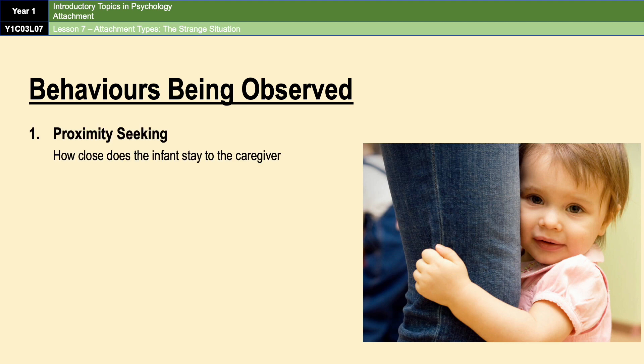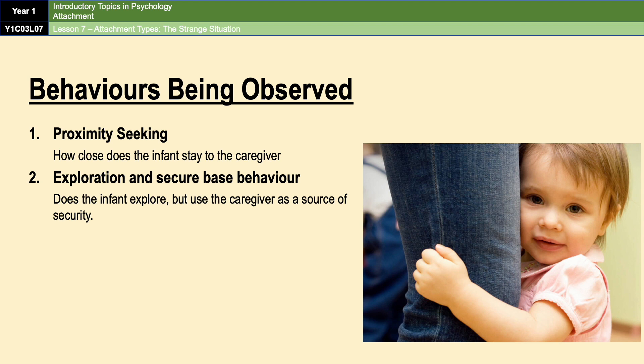The five behaviors are: proximity seeking, which is whether the baby will attempt to stay close to the caregiver; and exploration and secure base behavior, which looks at the infant's confidence around exploring the unknown environment but also how often the baby uses the caregiver as a source of security. You might see the infant look back and check that mum is still there, or go back to mum every now and again before venturing back out into the room.